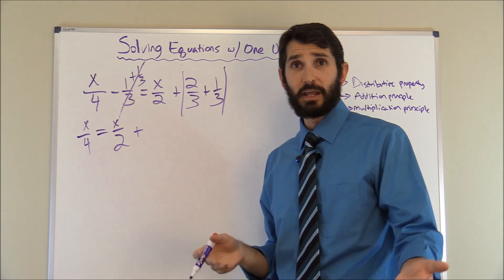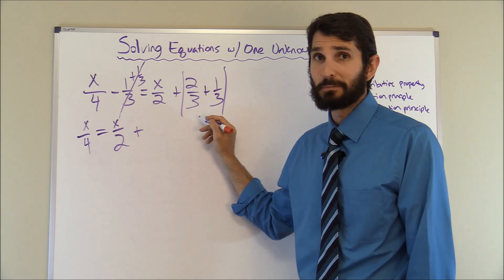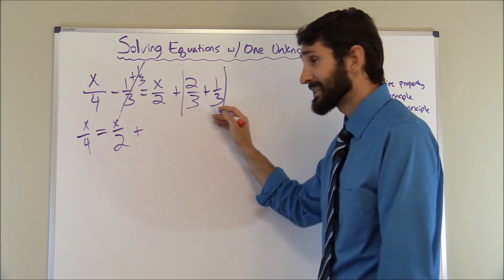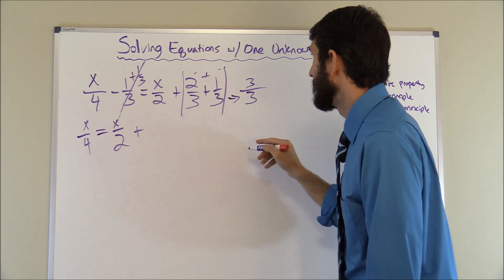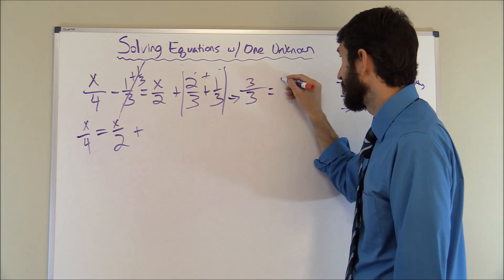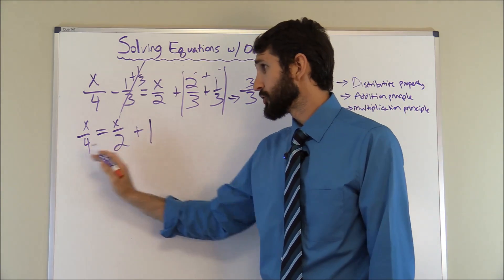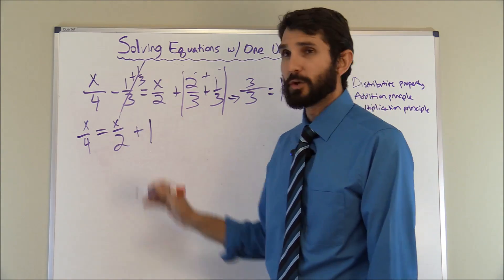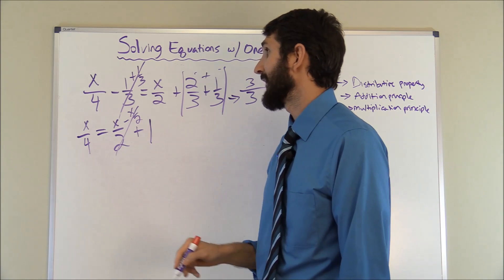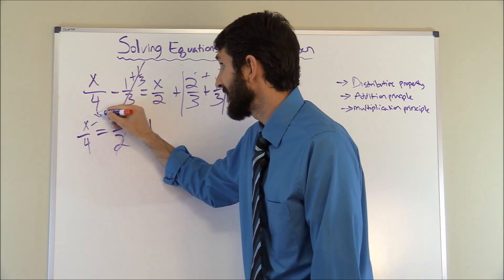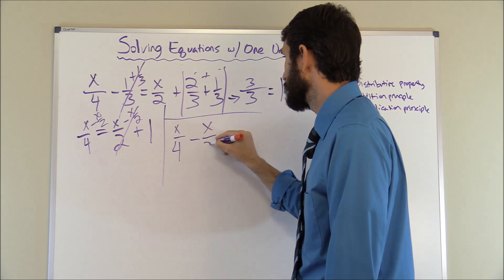Carrying down, we have X over four on the left. On the right, we now have X over two plus two thirds plus one third. Since the denominators are the same, we keep the denominator of three and add the numerators: two plus one equals three, giving us three over three, which equals one. So we have X over four equals X over two plus one. Now we subtract X over two from both sides using the addition principle, giving us X over four minus X over two equals one.